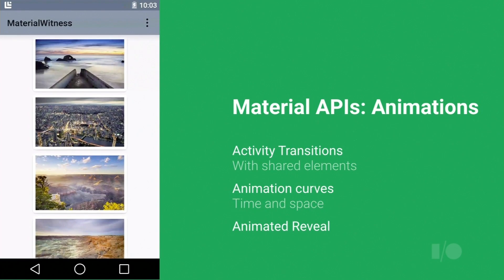The biggest animation feature is activity transitions, in particular the ability to share elements between activities. That technique for passing information between activities to fake a seamless animation has been baked into the platform — there's now a standard API for you to say 'this is my shared hero element,' pass those between activities, animate them, animate other items in and out, and customize the entire experience, making transitions seamless for the user as they move from state to state.